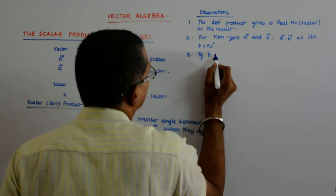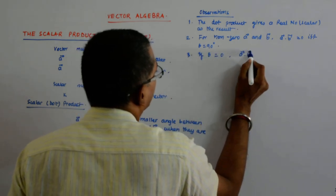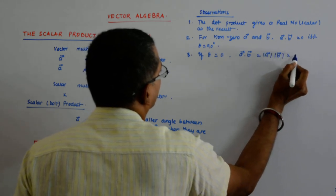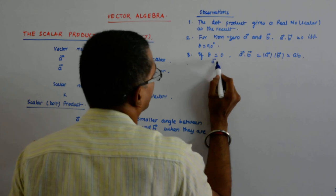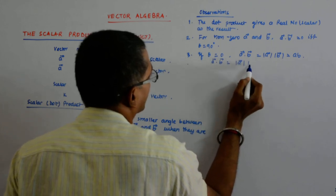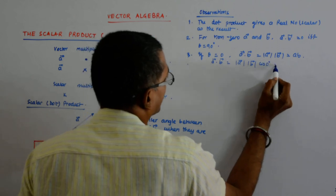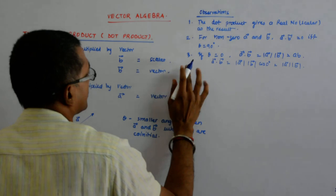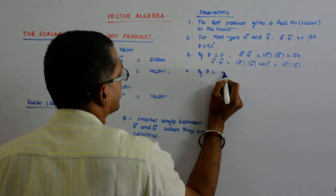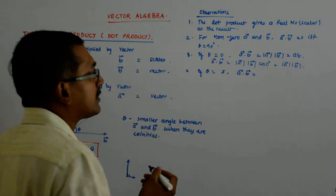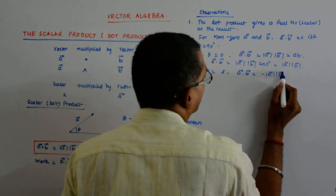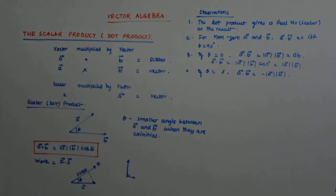If theta is equal to 0 then a dot b is equal to mod a into mod b, which can be simply written as ab. If theta is equal to pi, why does that happen? Because a dot b becomes mod a mod b, cos 0 is 1 that is fine. What if theta is equal to pi? Then a dot b becomes mod a mod b cos pi is minus 1. So, minus mod a mod b if theta is equal to pi.